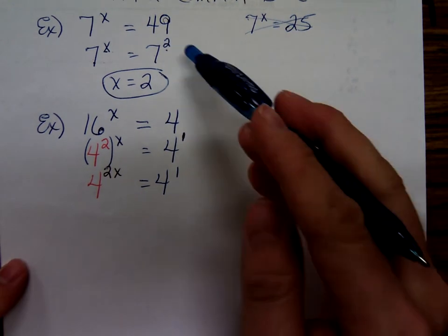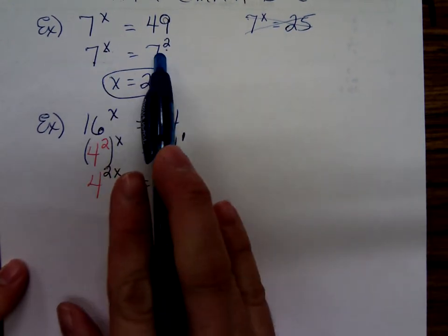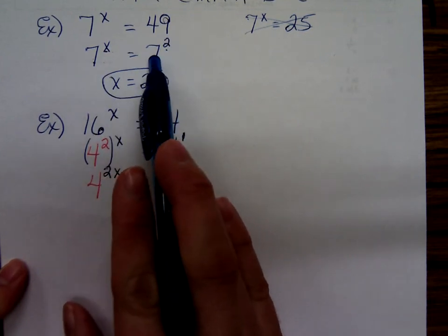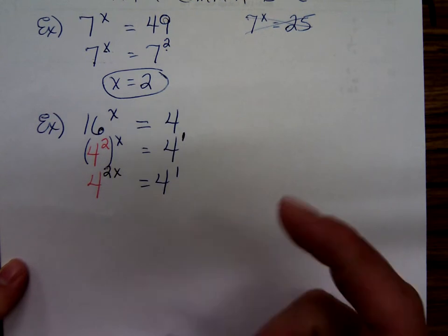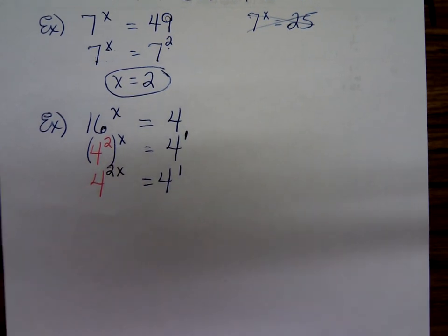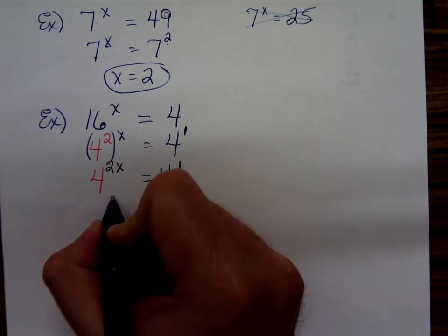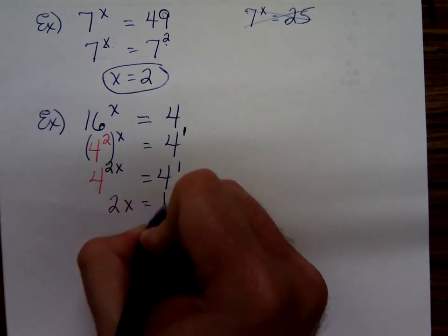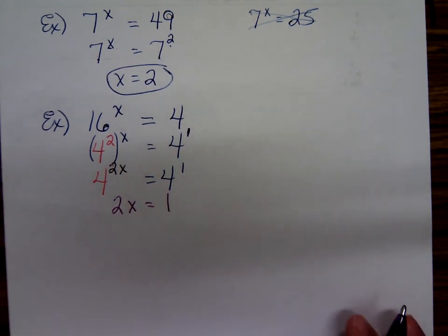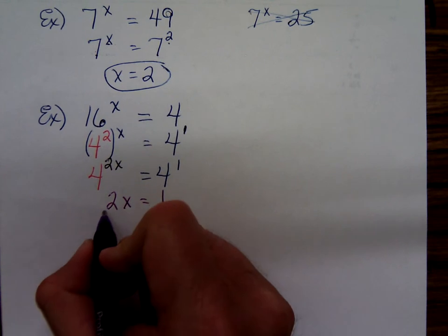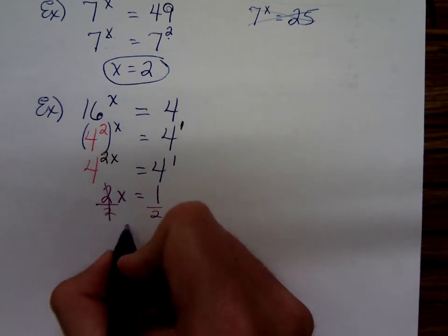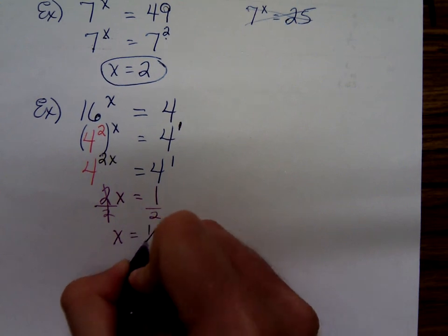So, we have 4 to the 2x equals 4 to the first. Now, once you have it written with that same base, if the bases are the same, then the exponents must be equal. So just drop the 4s and write 2x must equal 1. Divide both sides by 2 to get x equals 1 half.